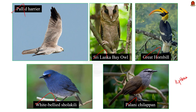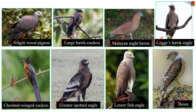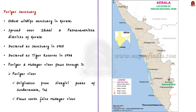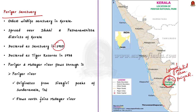Let us learn a few facts about Periyar reserve in a prelims perspective. Periyar sanctuary is the oldest wildlife sanctuary in Kerala and also credited with having the largest protected area. Periyar tiger reserve gets its name from the river Periyar, which has its origin deep inside the reserve. It falls in the districts of Idukki and Pathanamthitta in Kerala. It was declared a sanctuary in 1950 and declared a tiger reserve in 1978. Major rivers flowing through the reserve include the Mullayar and Periyar.